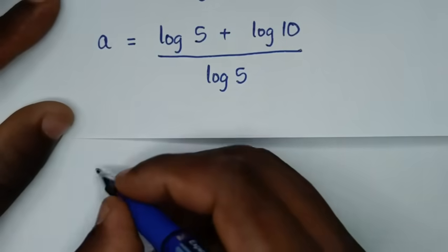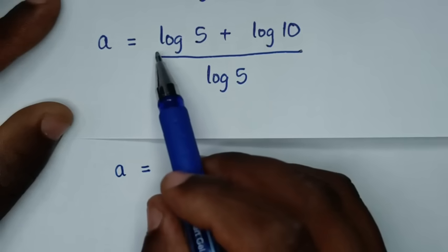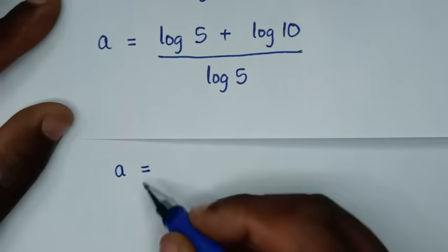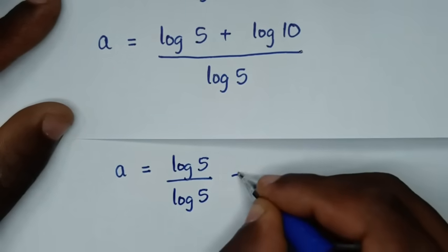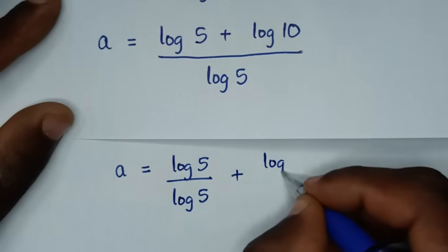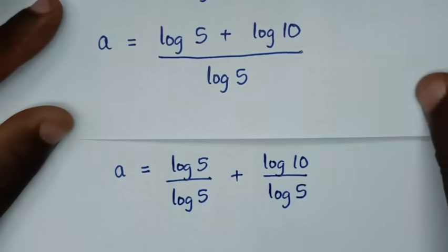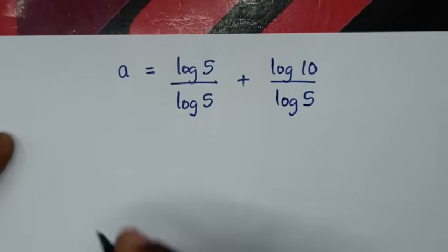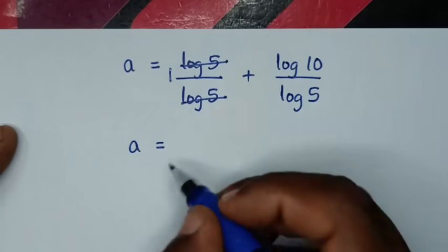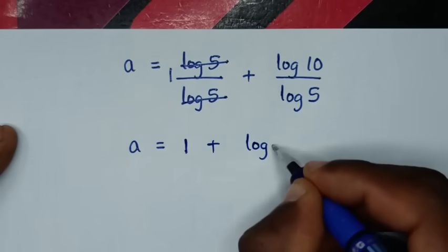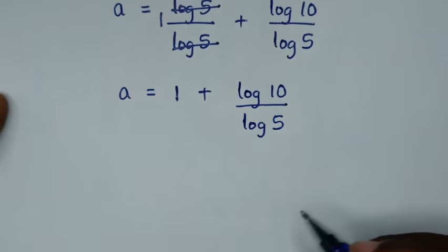In the next step, a is equal to — we divide through by log of 5 in each part — so it will be log of 5 over log of 5, plus log of 10 over log of 5. Then log of 5 divided by log of 5 is 1, so it will be 1 plus log of 10 over log of 5.